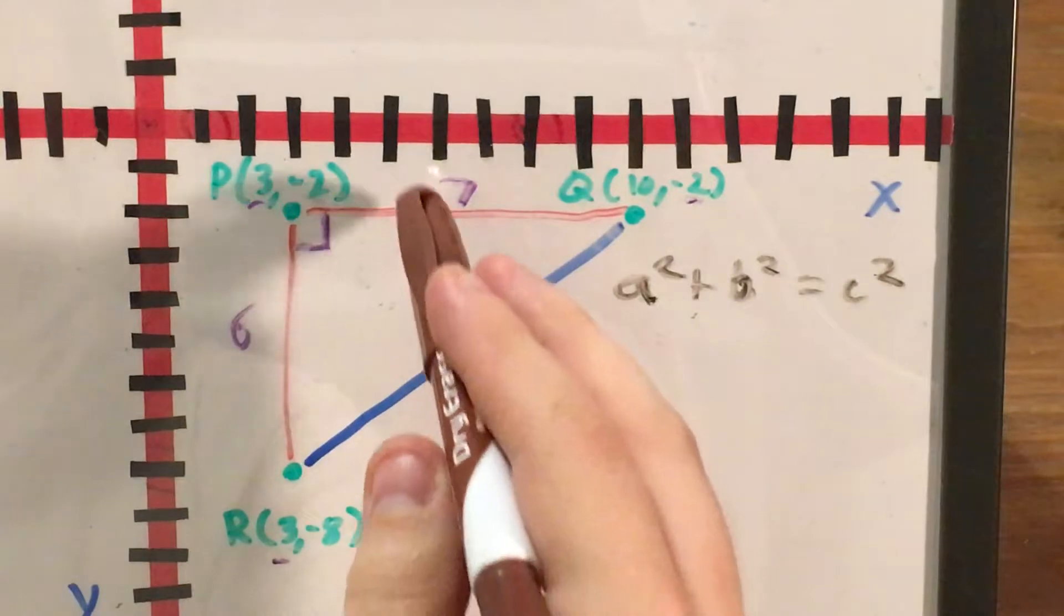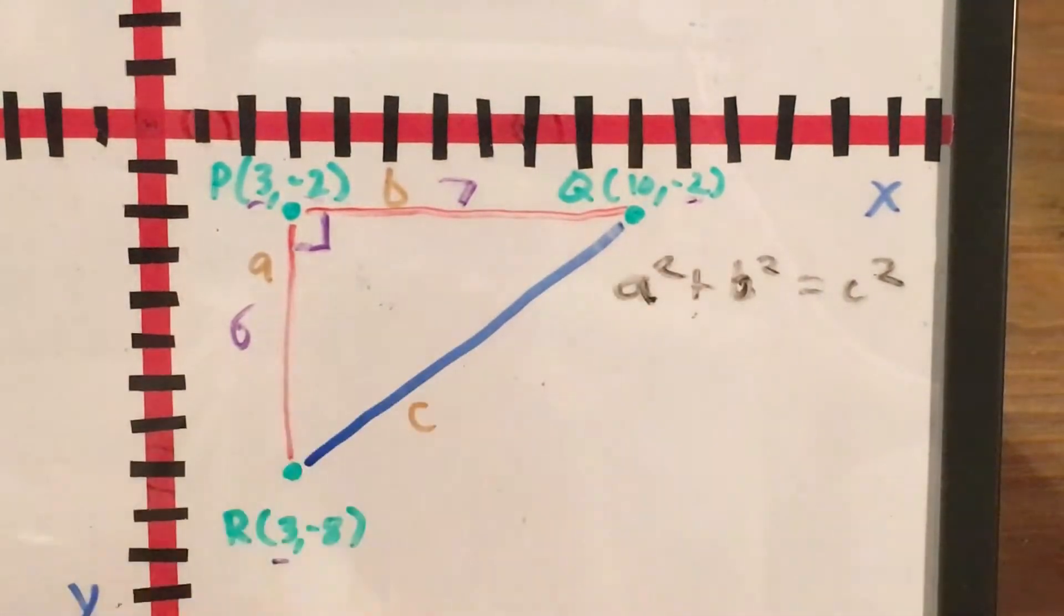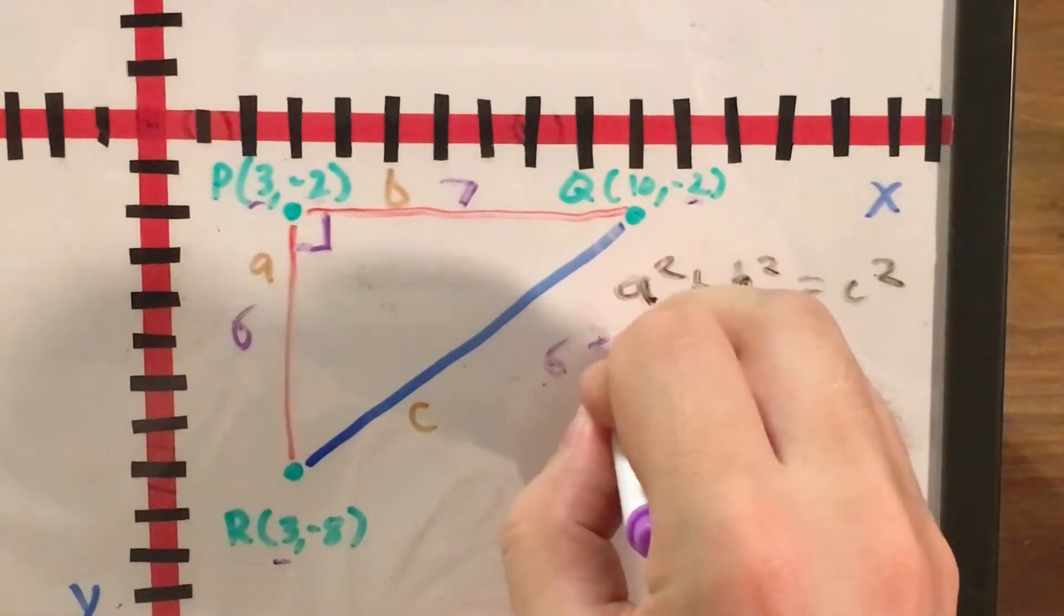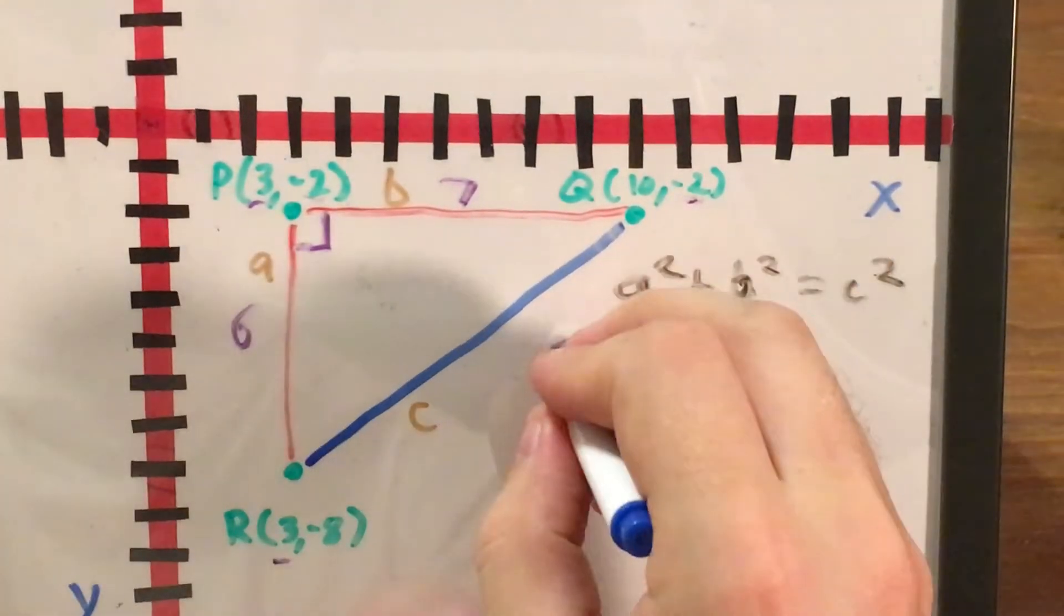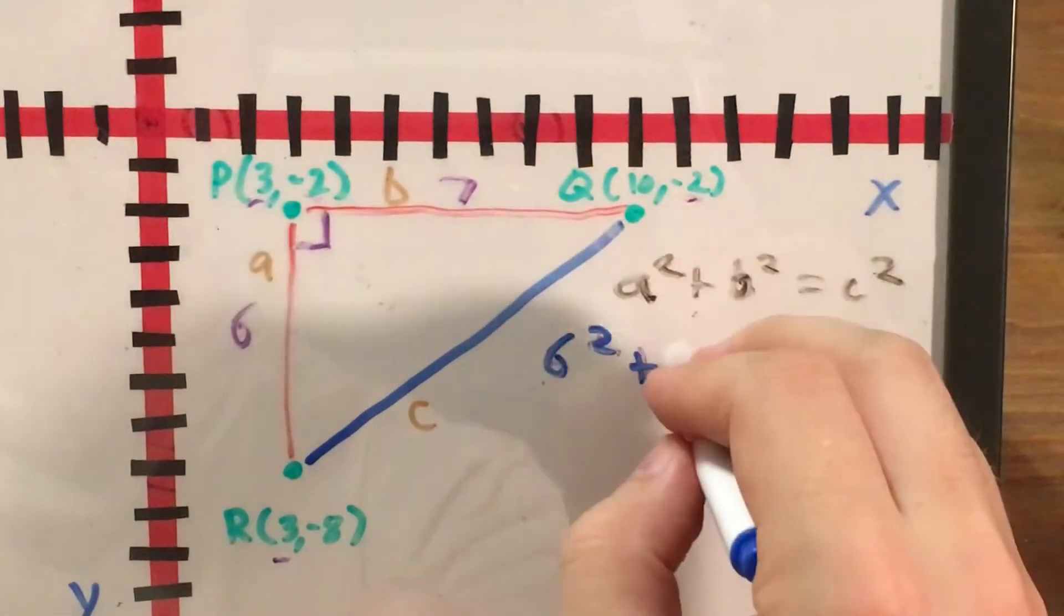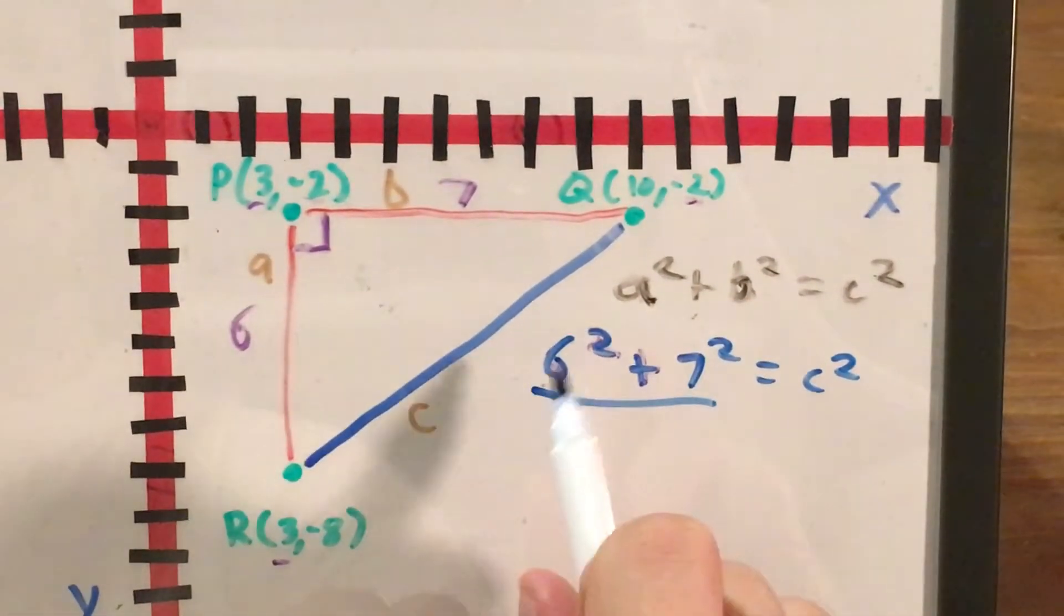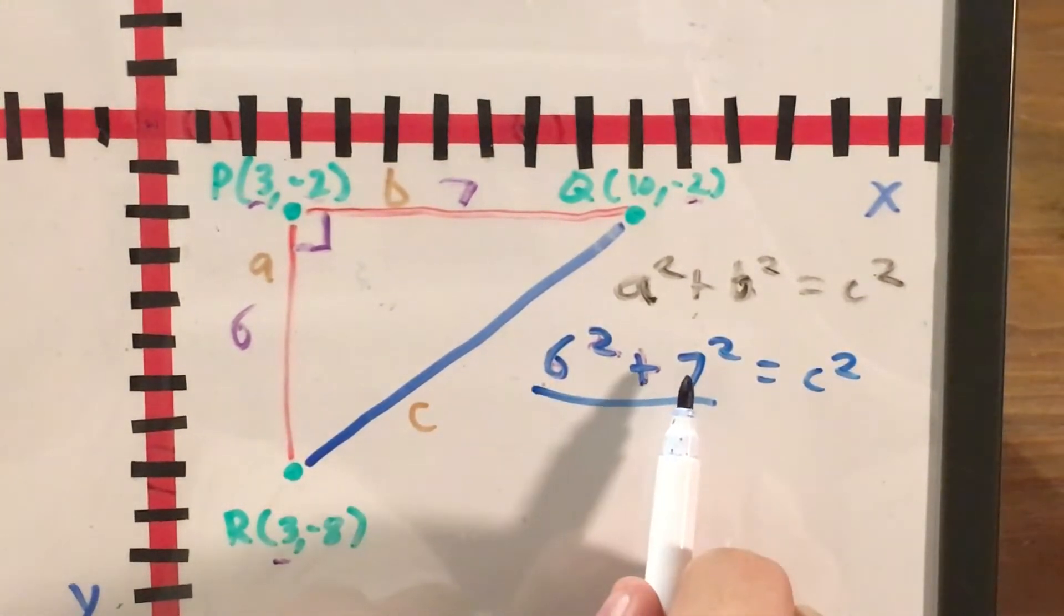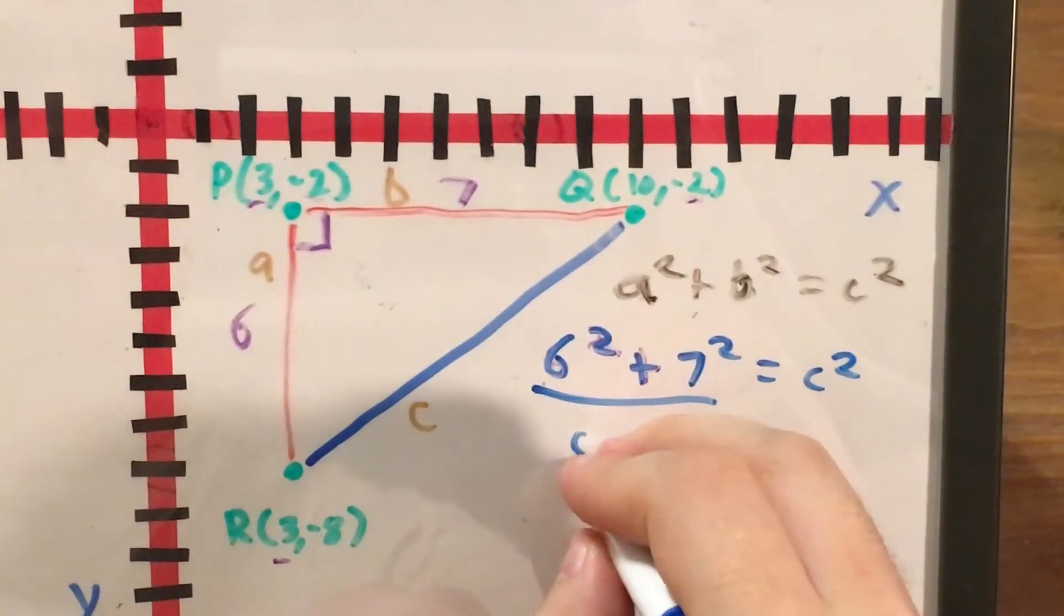So at this point I'm going to call my sides A, B, and C and I'm going to sub in some of the numbers that I know. A is 6 so 6 squared, plus B was 7 so 7 squared equals C squared. Now to evaluate this I can use my times tables or my calculator to get that 6 times 6 is 36, 7 times 7 is 49, and then 36 plus 49 will give me 85.